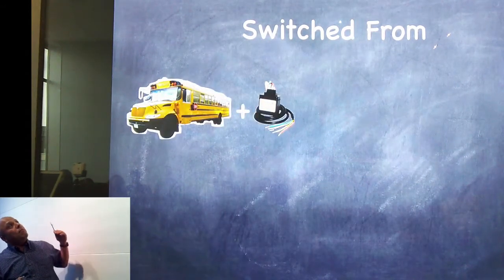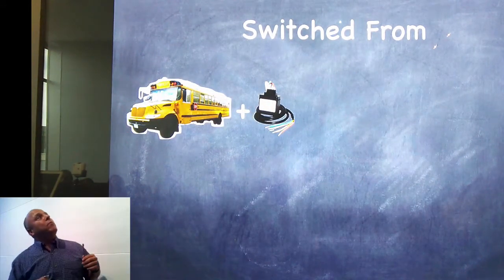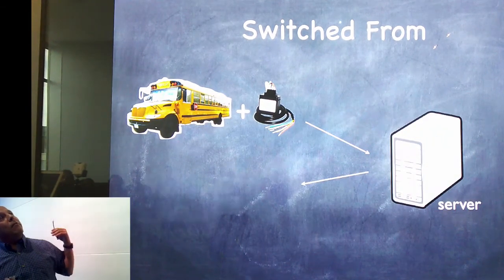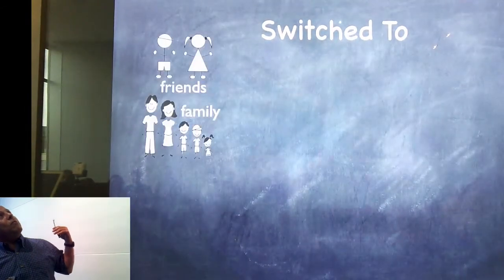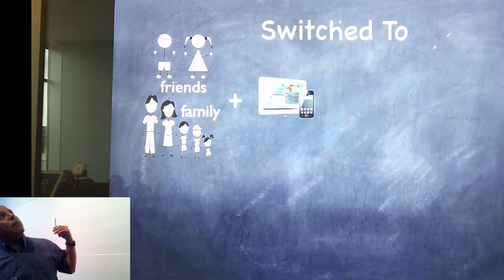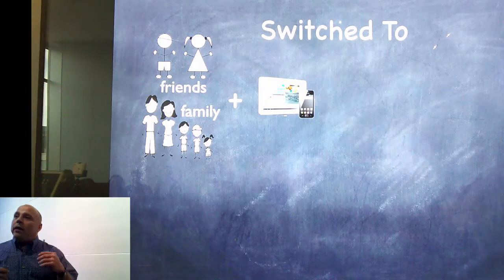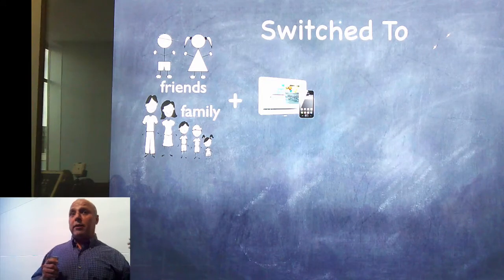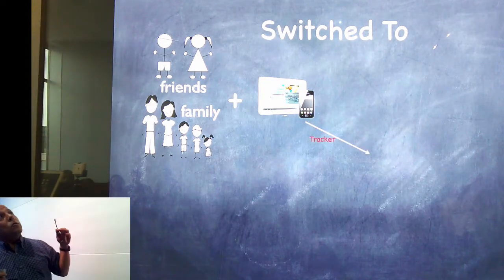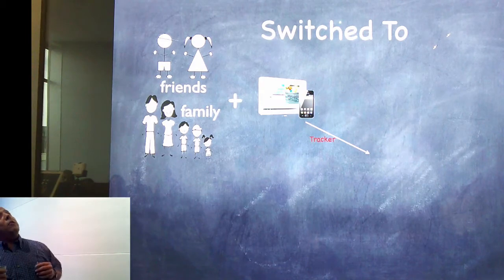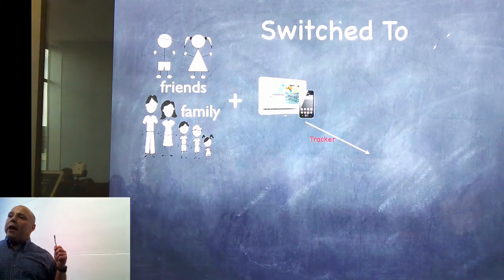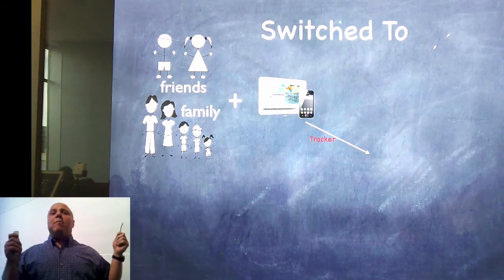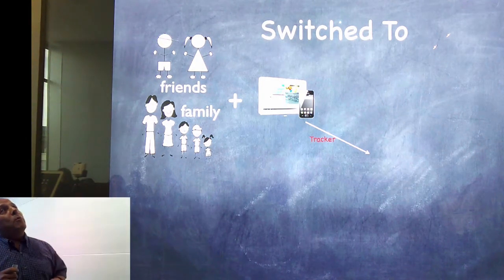We switched from the bus and gizmo sending the location record to the server and having the parent consume it. We switched to friends and family and a mobile device — it could be a mobile phone or tablet with a cellular receiver and a GPS tracker. These devices would run our app, and the app would allow friends and family to turn on the tracker, and the tracker would post the data.